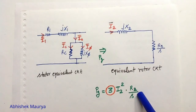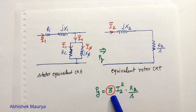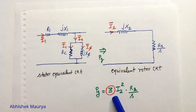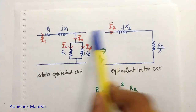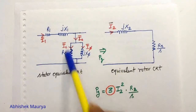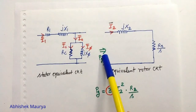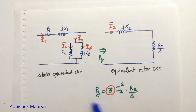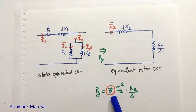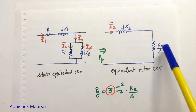I have used a multiplication factor of three here because this circuit is drawn on a single-phase basis and we are writing the equation for Pg on a three-phase basis, so I need a multiplication factor of three here.